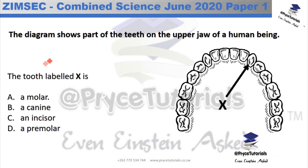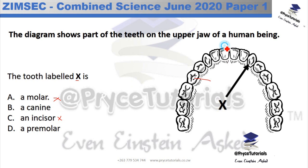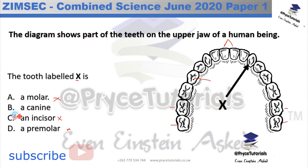The diagram shows part of the teeth on the upper jaw of a human being, and the tooth labeled X is the canine. It is not the molar — those are further back. It is not the incisor — those are the front teeth. The premolars are on the end of the jaw. The answer is option B.